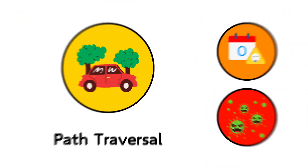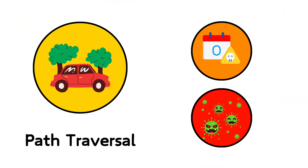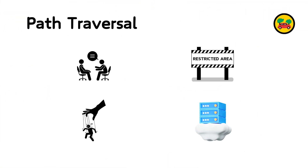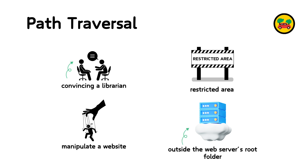19. Path Traversal. Path traversal is like convincing a librarian to let you into a restricted area where they keep private documents. In this attack, hackers manipulate a website to access files and directories that are stored outside the web server's root folder and are not supposed to be public.